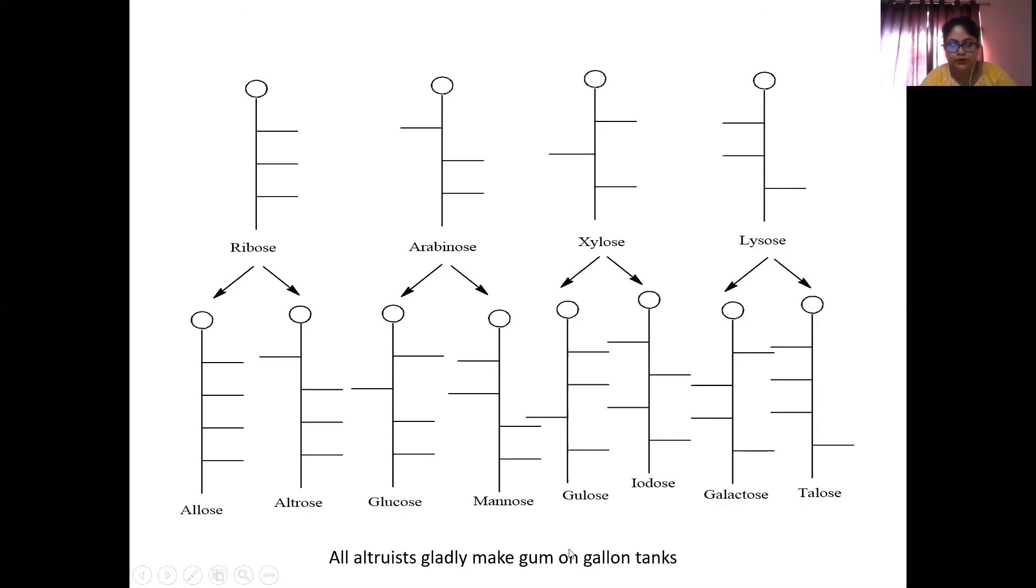gum for gulose, in for idose, gallon for galactose, and tanks for talose.